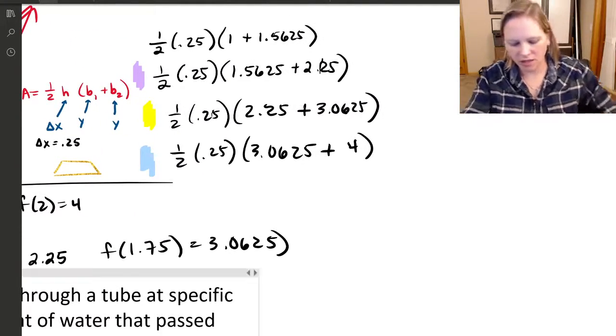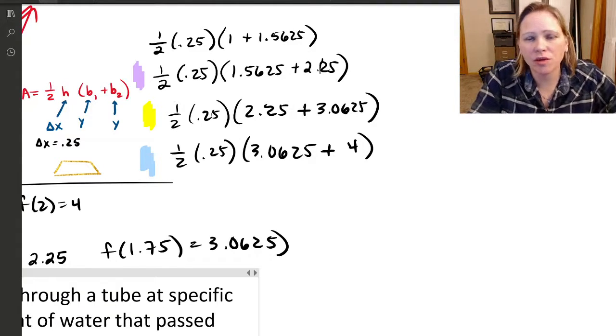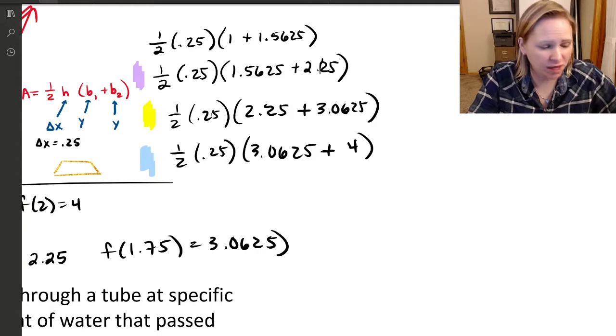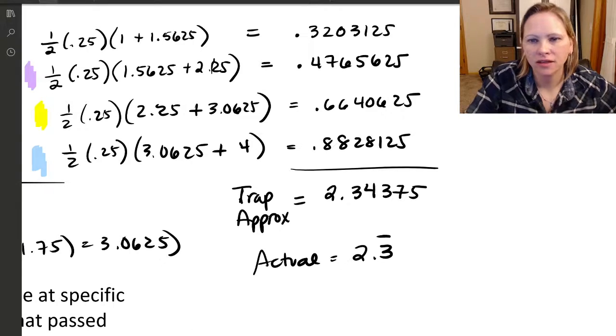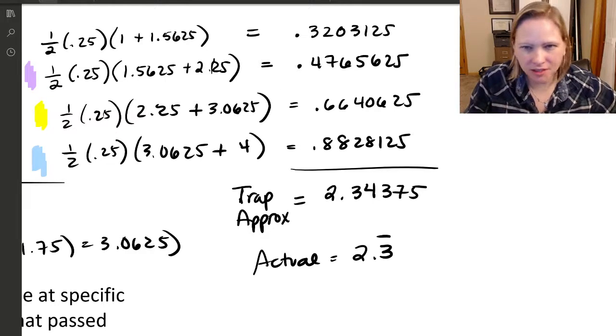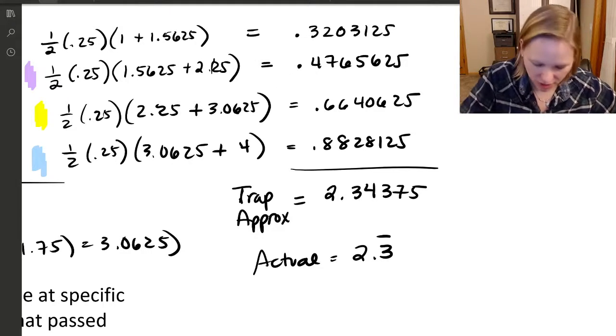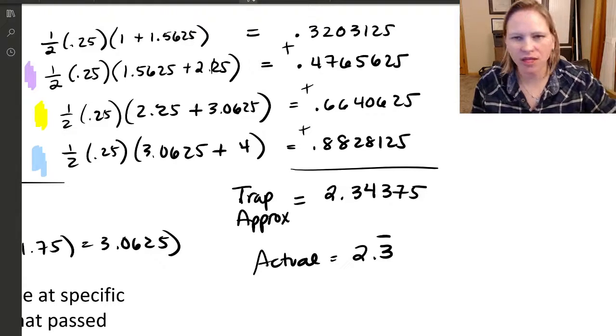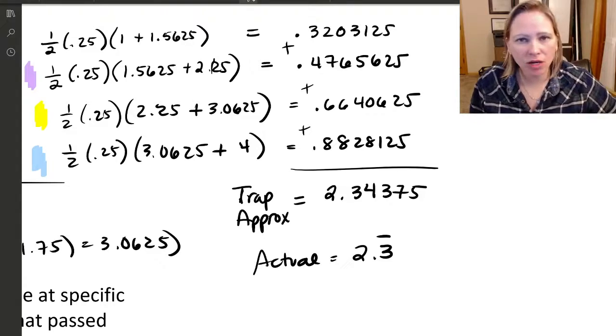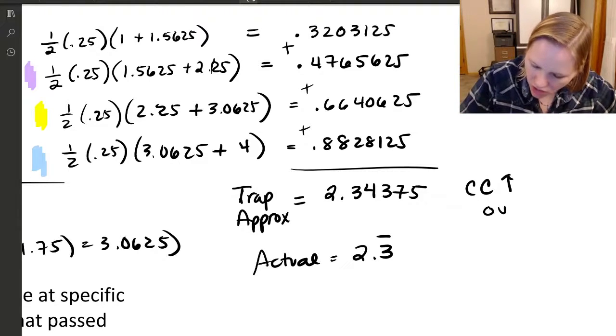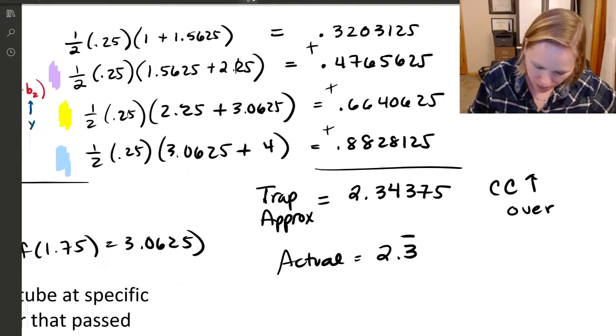Then what I need to do is crunch all this out. These decimals are a little bit more than what the AP exam would ask you to crunch out in your head. Use a little calculator when it gets like this. Here's what we get with our trapezoid approximation when we crunch these out and add them together. We end up with 2.34375. The actual value is 2.3 repeating. It's not a bad approximation. It is an overestimate and it has to do with the concavity.